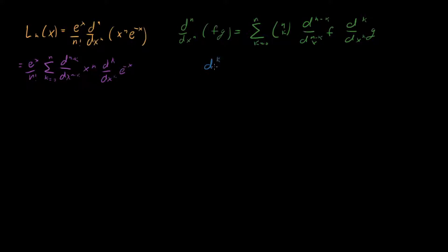Let's evaluate these two derivatives independently, starting with the easier one on the right. The kth derivative of e to the minus x: we know that taking a derivative of e to the alpha x just pulls down alpha, so in this case this is just equal to minus one to the k times e to the minus x.